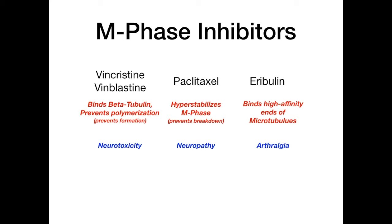To summarize: vincristine/vinblastine are basically the same drug — they prevent formation by binding to beta-tubulin and preventing polymerization. Paclitaxel hyperstabilizes the M phase and prevents breakdown. Eribulin binds to the high-affinity ends of the microtubules and prevents them from doing their job. Side effects: vincristine and vinblastine cause neurotoxicity; paclitaxel causes neuropathy; eribulin causes arthralgia.